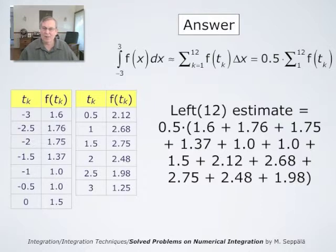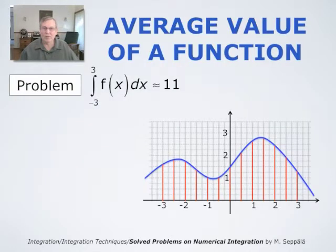So this is our approximation for this integral, and we simply add up these numbers. We get approximately 11. So the answer is that this integral from negative 3 to 3, f of x dx, is approximately 11.